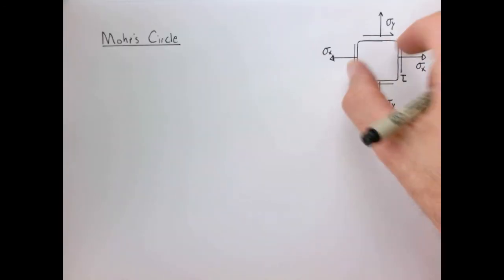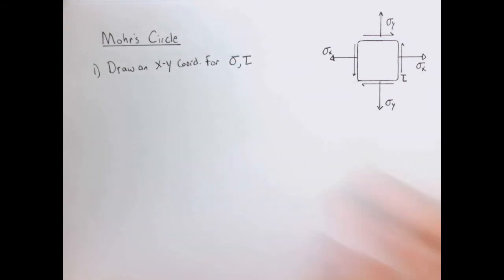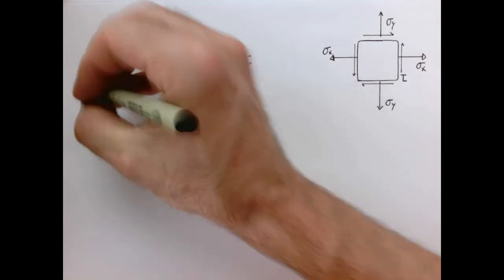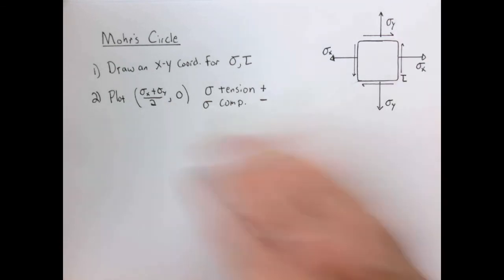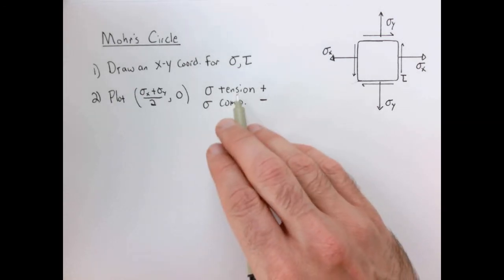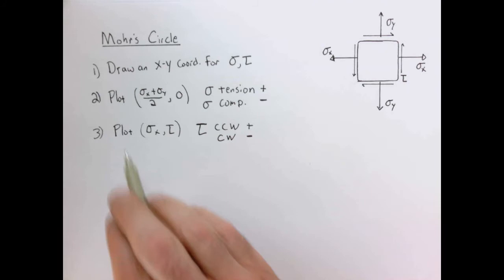So let's generalize this for any arbitrary orientation of our little element in general. Here I'm calling sigma x the tensile or compressive force in the x direction, sigma y the tensile or compressive force in the y direction, and tau is the shear around it. So let's go through the algorithm. Step one is to draw an xy coordinate for the normal stress and the shear acting on an element of any arbitrary orientation. Now we're going to plot the point sigma x plus sigma y divided by two, so the average of those two normal stresses comma zero. We're going to take the sign convention that tension is positive, compression is negative.